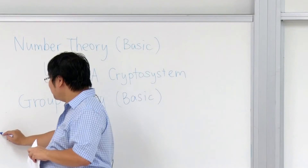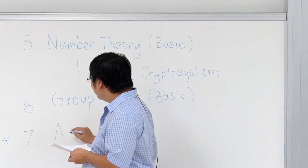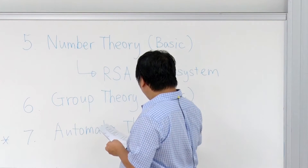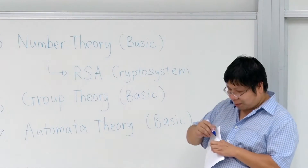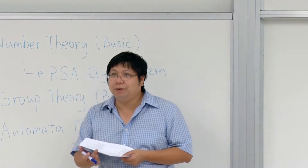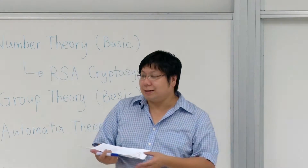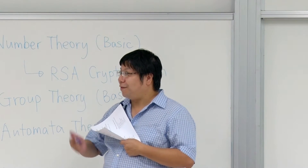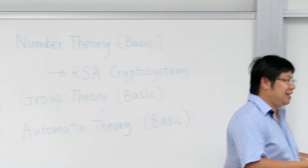And finally, if we have time — normally we don't — we will talk about something called automaton theory. Automaton theory involves a very simple machine that can help us do some computation. This machine has only finite memory. To illustrate, suppose we want to solve this problem: somebody gives us a bit string, and we want to determine whether it represents an even or odd number.